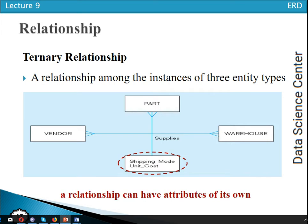Next is the ternary relationship. A ternary relationship is a relationship among the instances of three entity types. An example is vendor, part, and warehouse: each vendor supplies different parts to different warehouses. Here we also have an attribute on the relationship. So a relationship among the instances of three different entity types is called a ternary relationship.